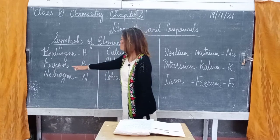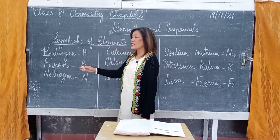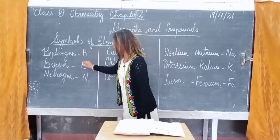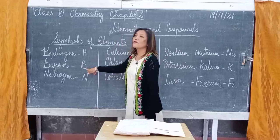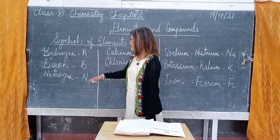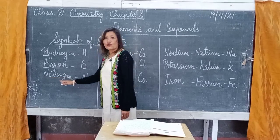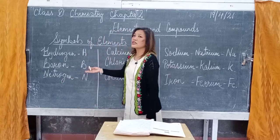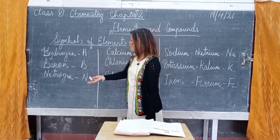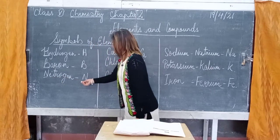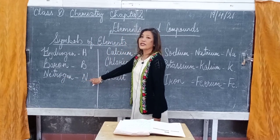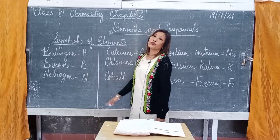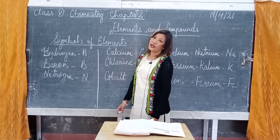The next example is boron, where the first letter is B. So the symbol of boron is B. Then the next element is nitrogen, where the first letter is N. So to write the symbol of nitrogen, we take the first letter N. This is the first rule to remember when writing symbols of elements.